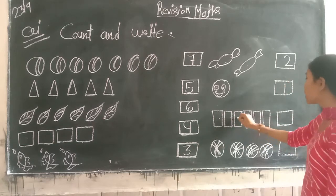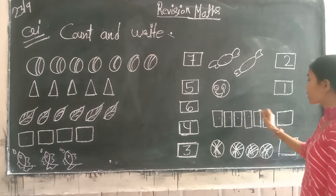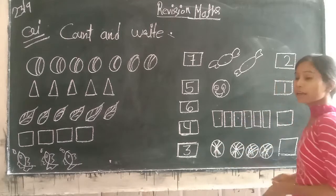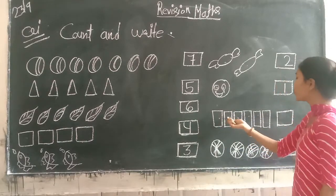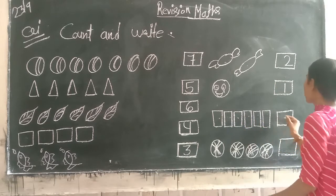Two, three, four, five, six. Rectangle shape. One, two, three, four, five, six.